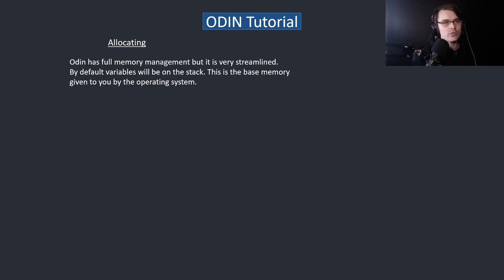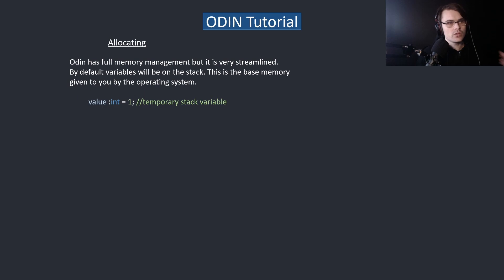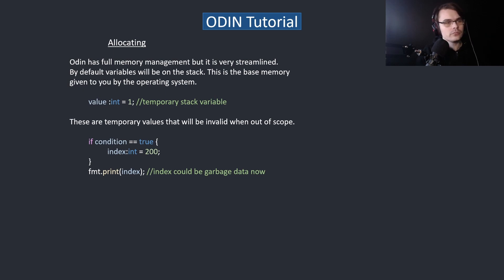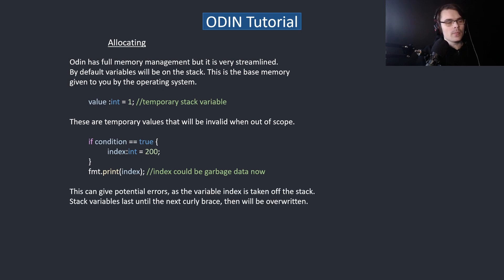Odin has full memory management but is very streamlined. By default, variables will be on the stack — this is the base memory given to you by the operating system. If you create something like 'value equals 1', this is a temporary stack variable. These are temporary variables that become invalid when out of scope. So if we make an if statement and put the index inside that and then try to print the index after the curly brace, this will basically be garbage data or could give you errors. You don't want to use a variable when it's out of scope — when it's ended, when it's been cleared. Sometimes it's not cleared, but it basically means that it's invalid memory that you shouldn't access.